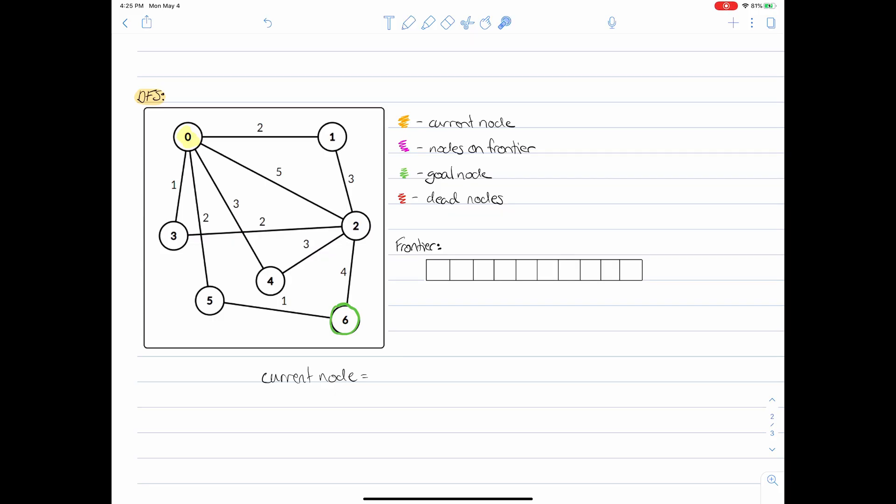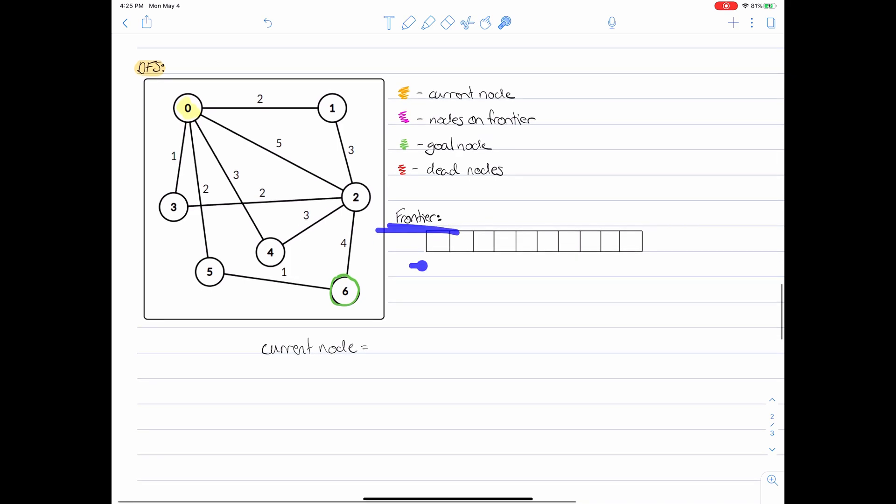I'm going to be doing the same example that I did when I was explaining BFS. In this example once again we have the starting node right here, node zero, and we have our frontier which is right here, represented as an array just as it was before. If you look here you can see a legend that explains exactly what the various colors mean. The first step of the algorithm is to take the starting node and put it into our frontier.